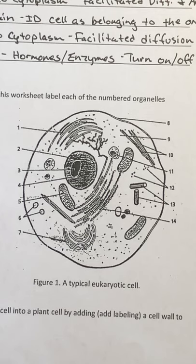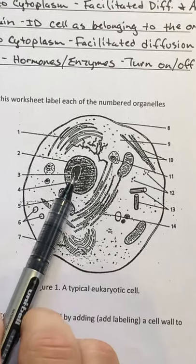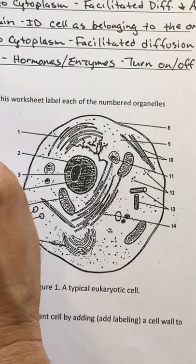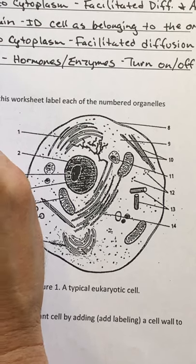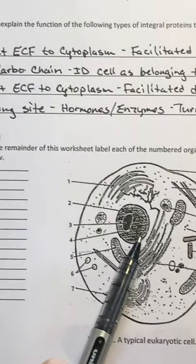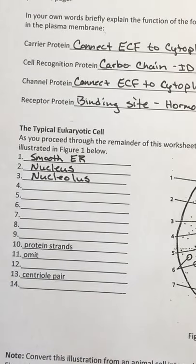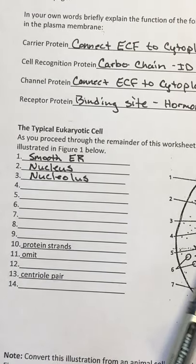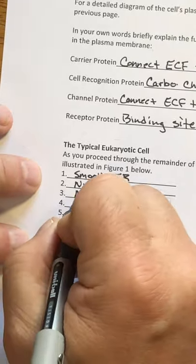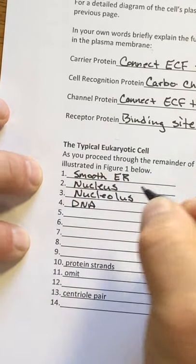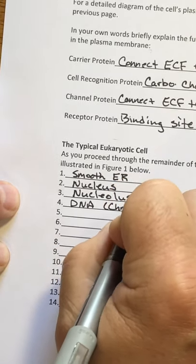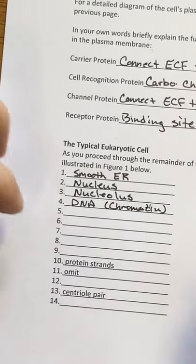Number three is inside the nucleus — it's that dark conspicuous region inside of the nucleus. It sounds like nucleus, just add a couple of extra vowels — that is actually the nucleolus. Number four is basically pointing to that rough kind of texture inside of the nucleus, which is the DNA. And if the cell is not dividing, that DNA is in the chromatin form.